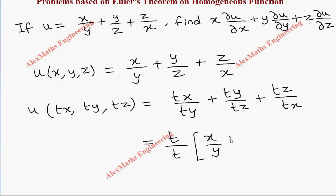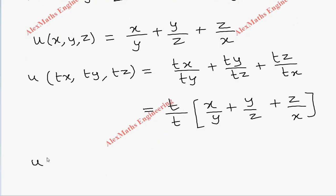So the remaining will be x by y plus y by z plus z by x, which is nothing but our original function. So u of tx comma ty comma tz is nothing but this is t power 0 of u of x comma y comma z.